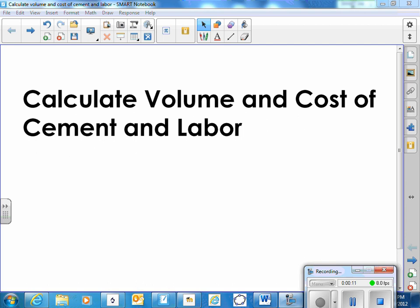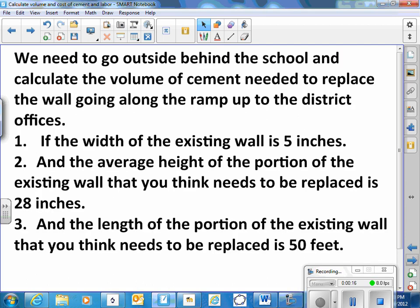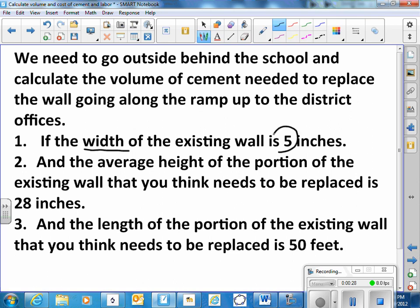We're doing a cement job. We'll use the example of the cement wall out behind the building that is in need of repair. So if we know the width of the existing wall is five inches, and the average height of the wall, let's say, is twenty-eight inches. If we measure several places and then find the average, and then we measure the length is fifty feet.